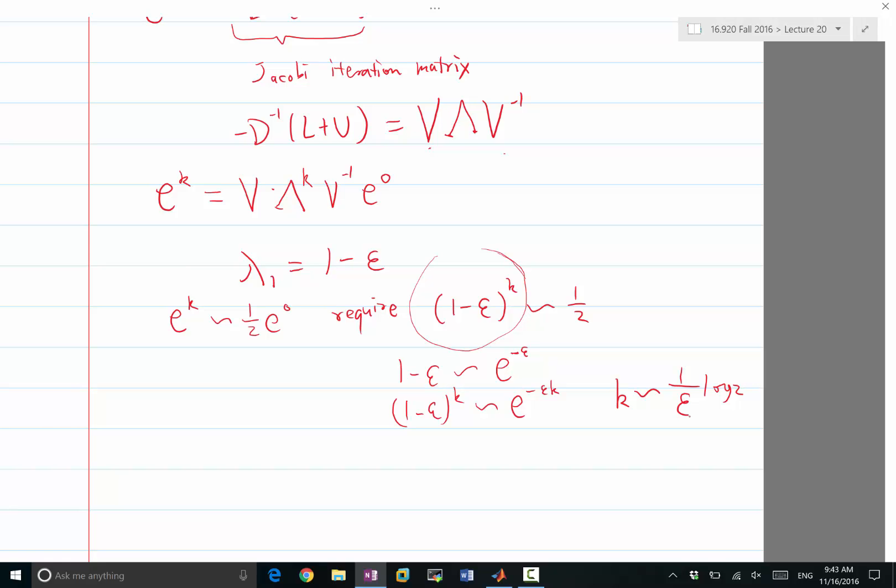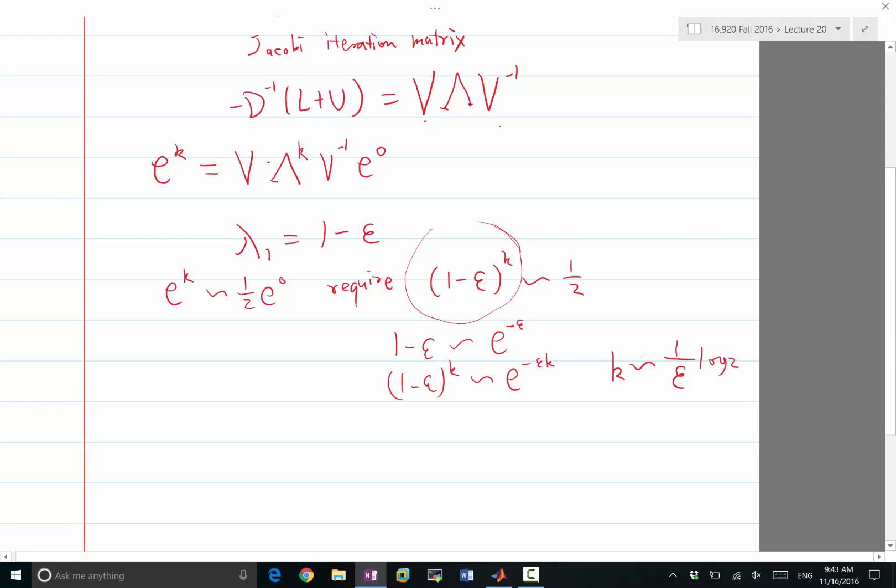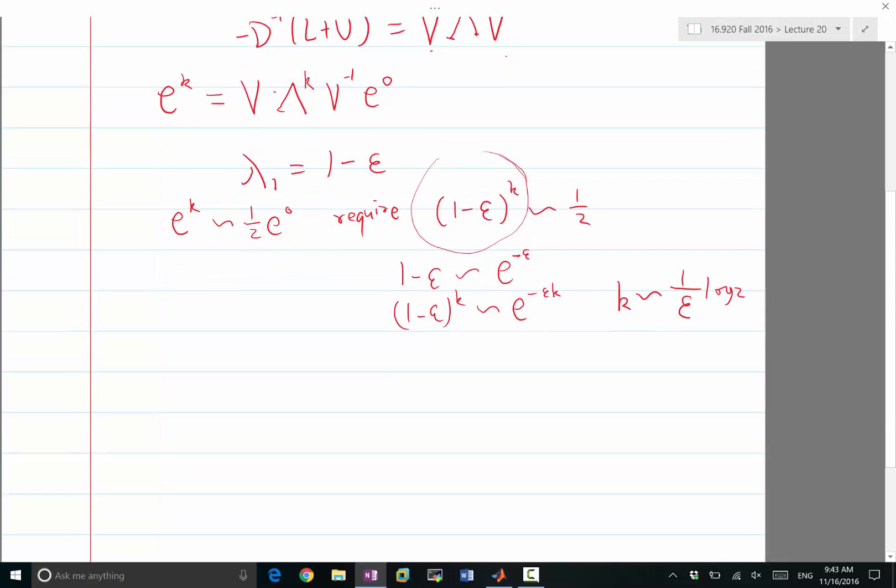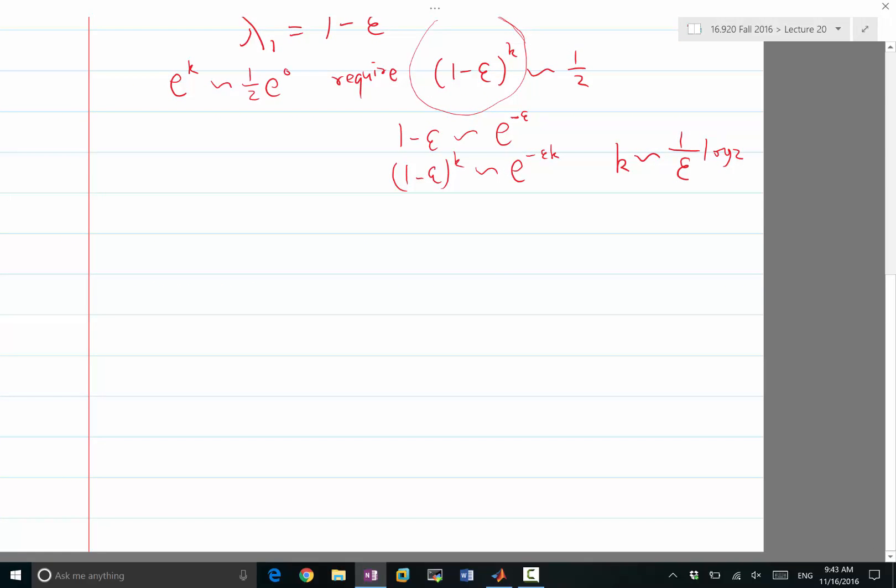Alright, so now we understand how the eigenvalues and eigenvectors are going to influence the Jacobi iteration matrix. Let's figure out what we are seeing on Monday, which is application of the Jacobi iteration to Poisson's equation. So we are going to analyze the one-dimensional case. For the one-dimensional case, the matrix A we have is 1/(Δx)^2 of [-2, 1; 1, -2, 1; ...]. This is our iteration matrix with zero boundary conditions.